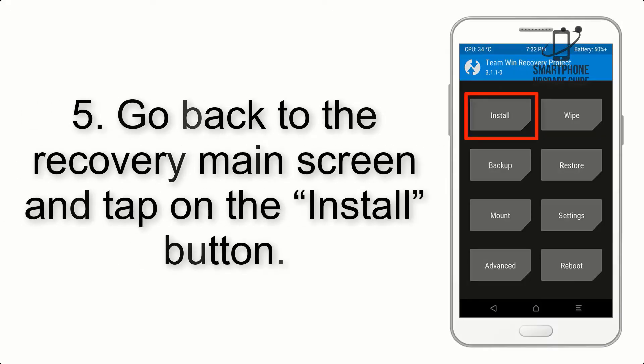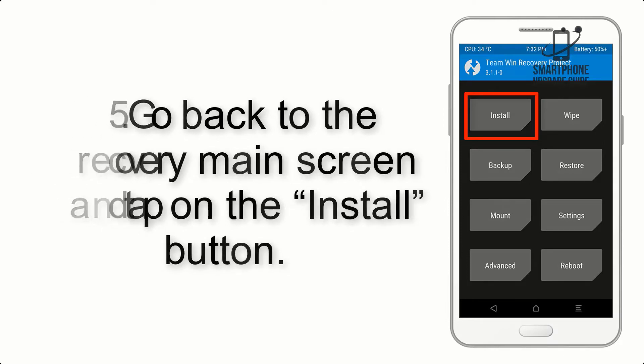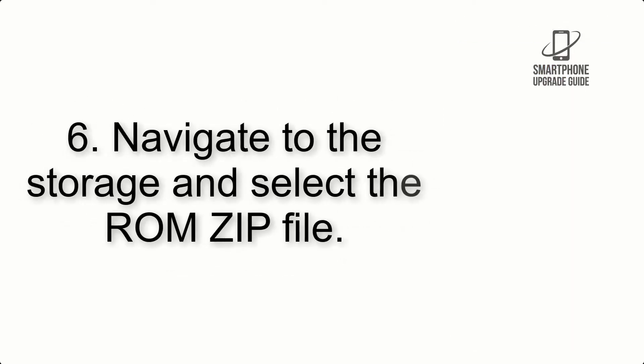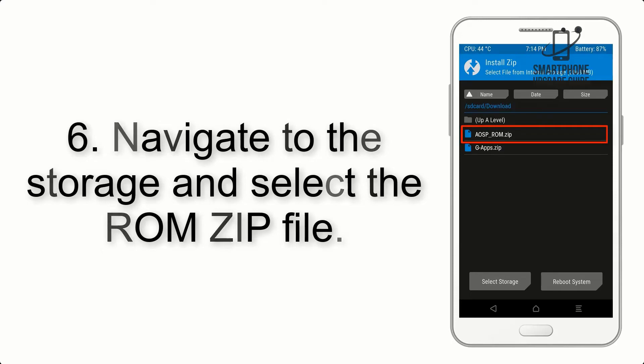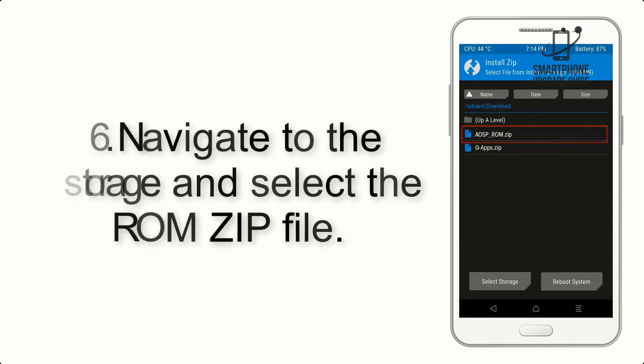Step 5. Go back to the recovery main screen and tap on the Install button. Step 6. Navigate to the storage and select the ROM ZIP file.